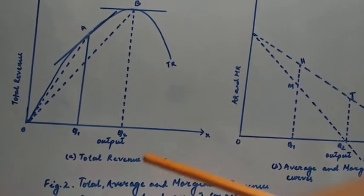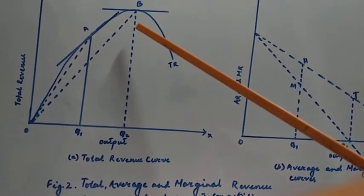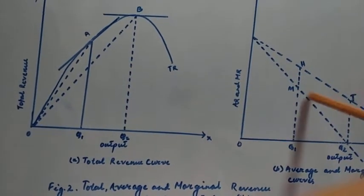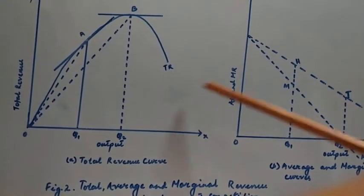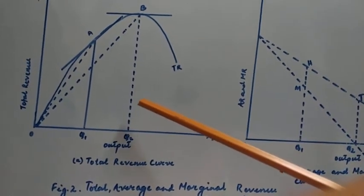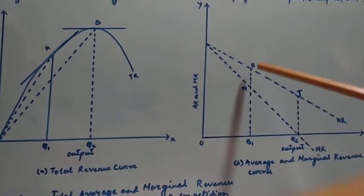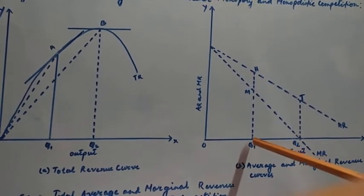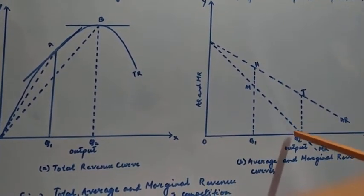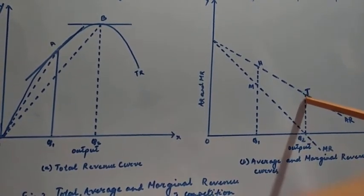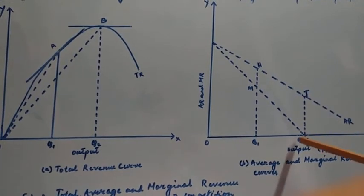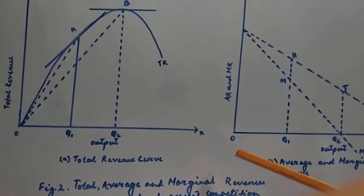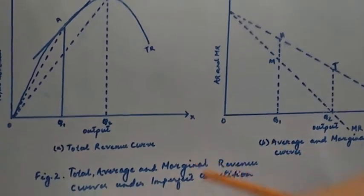By drawing rays from the origin to various points on the total revenue curve, we find that the slope of the rays declines as output sold increases. As output increases from OQ1 to OQ2, the slope declines from Q1H to Q2T. This declining slope represents the falling average revenue, as given in panel B of figure 2.